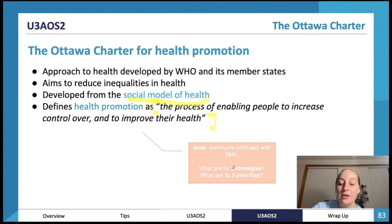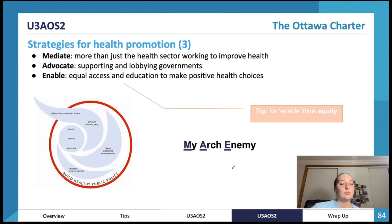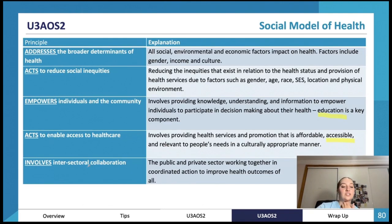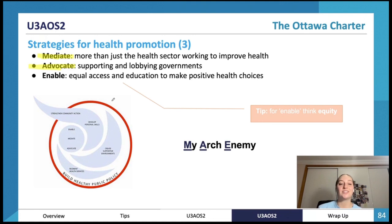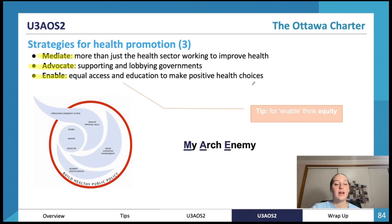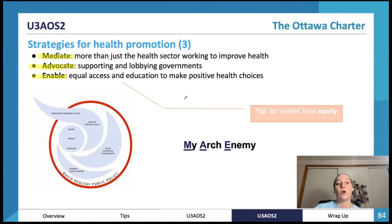The three strategies are mediate, advocate, and enable. Mediate means making sure more than just the health sector are working to improve health — getting everyone to work together, similar to intersectorial collaboration. Advocate means supporting and lobbying governments so that everyone promotes health-improving behaviour and helps implement health promotion. Enable means equal access and education to make positive health choices — making sure everyone can access health promotion and understand why it will benefit them.